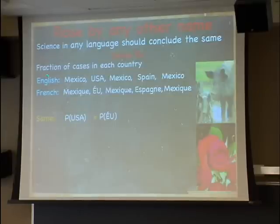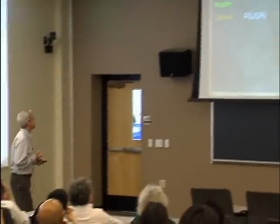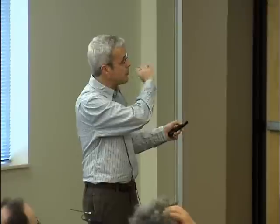We should get the same answer not only in English or French, but also in the language of mathematics. The first country we see we call number one, the second number two, then we see country one again, then a third country called number three, then the first again. This sequence — where we call the first element we saw number one, the second number two, and so on — is what we call the pattern of the sequence.